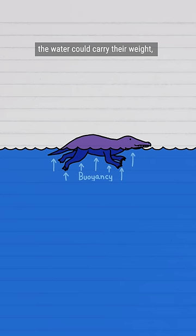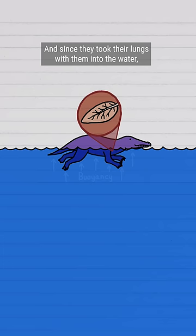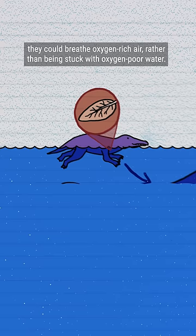So the critters could grow way bigger without worrying about holding up their massive bodies. And since they took their lungs with them into the water, they could breathe oxygen-rich air, rather than being stuck with oxygen-poor water. This enabled them to grow twice as big as the biggest fish.